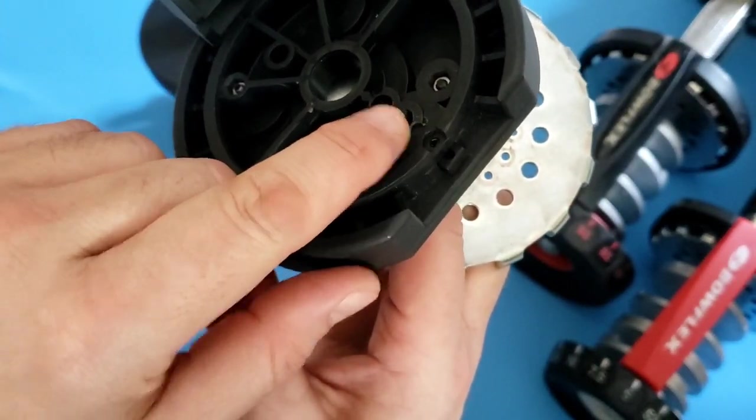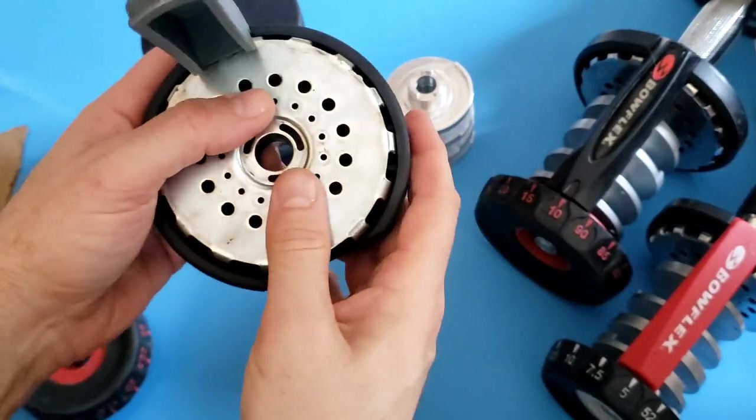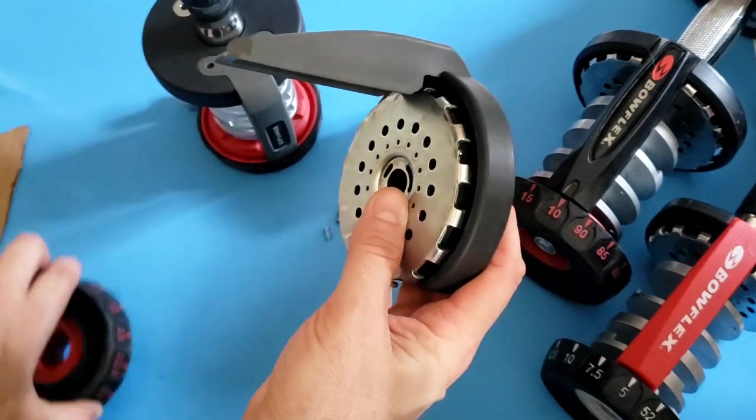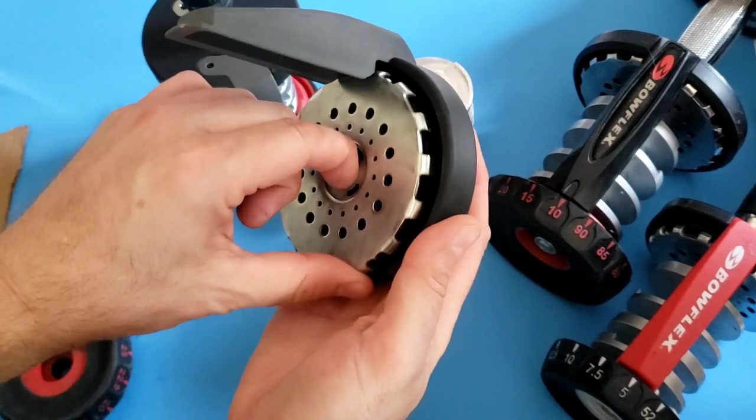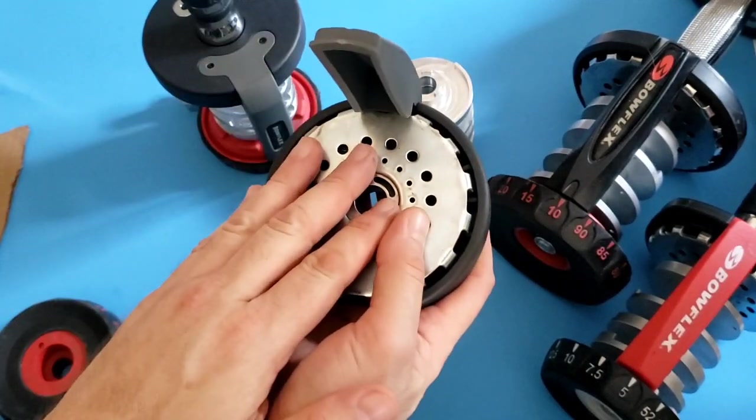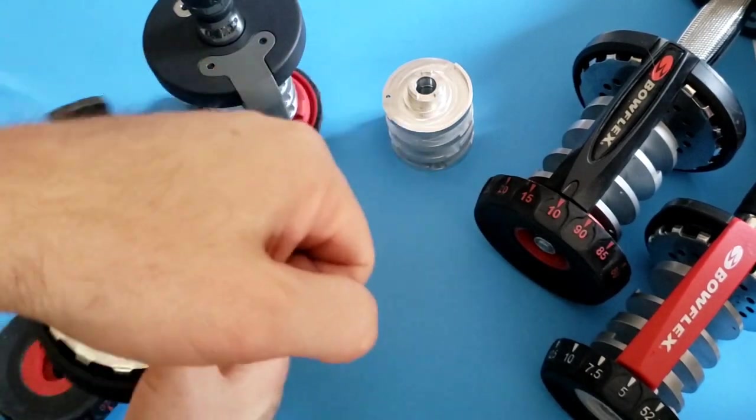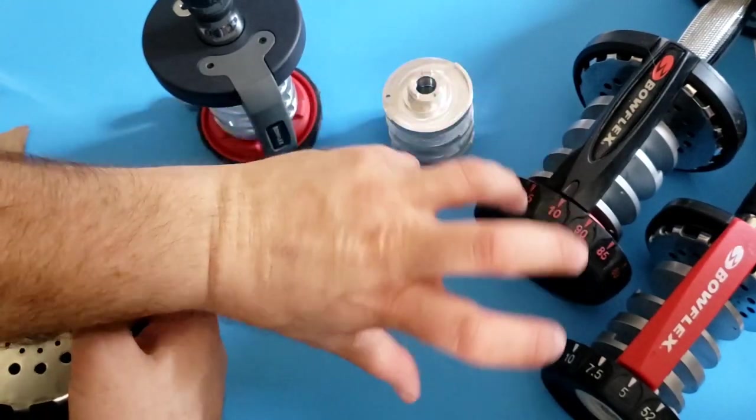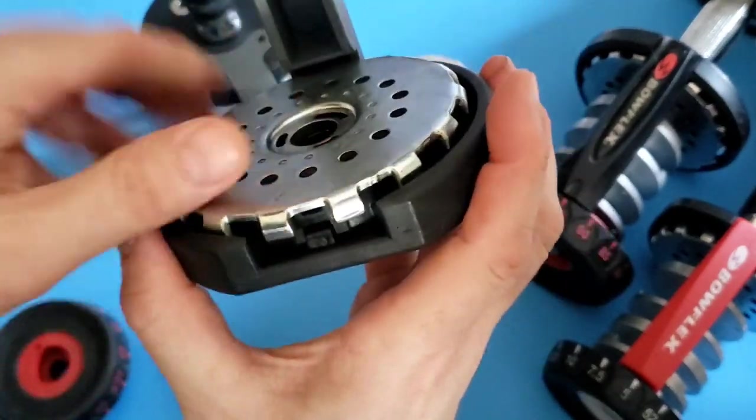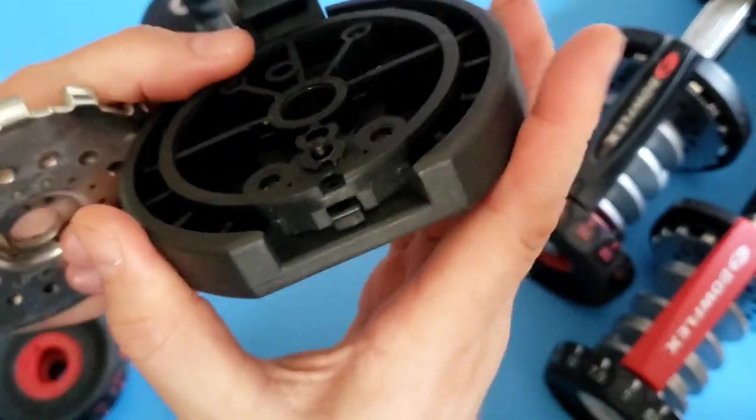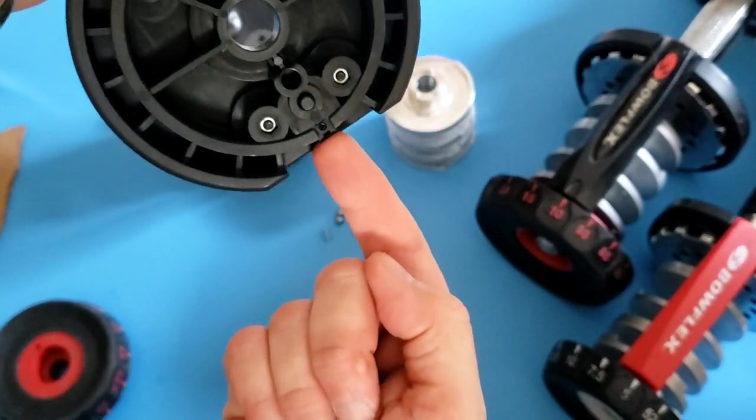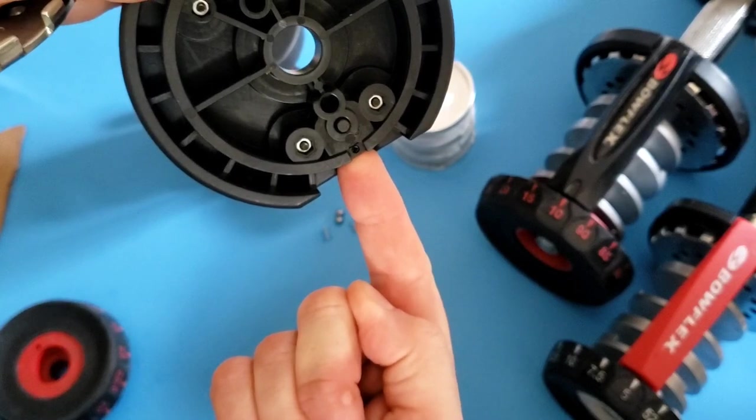What happens is when you're using your dial, when you're rotating this dial, it is rotating this assembly. And when your dumbbell is in the base, when it's in the base and you're selecting weights, what happens is the base depresses this button. It pushes it in because the weight of the dumbbell pushes the button in.